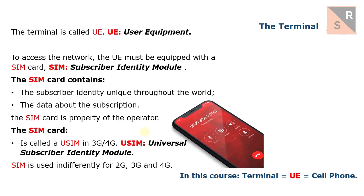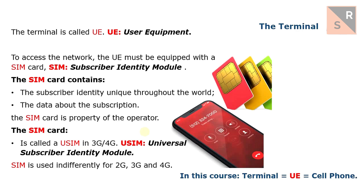To have access to the LTE network, the user equipment must be equipped with a SIM card. The SIM stands for Subscriber Identity Module and it contains the subscriber identity, unique throughout the world, as well as data about the subscription. The SIM card is the property of the operator. In 3G or 4G, this card is called USIM, or Universal Subscriber Identity Module. However, in this course we use the acronym SIM, as it is simpler and often used to identify 2G, 3G, and 4G.